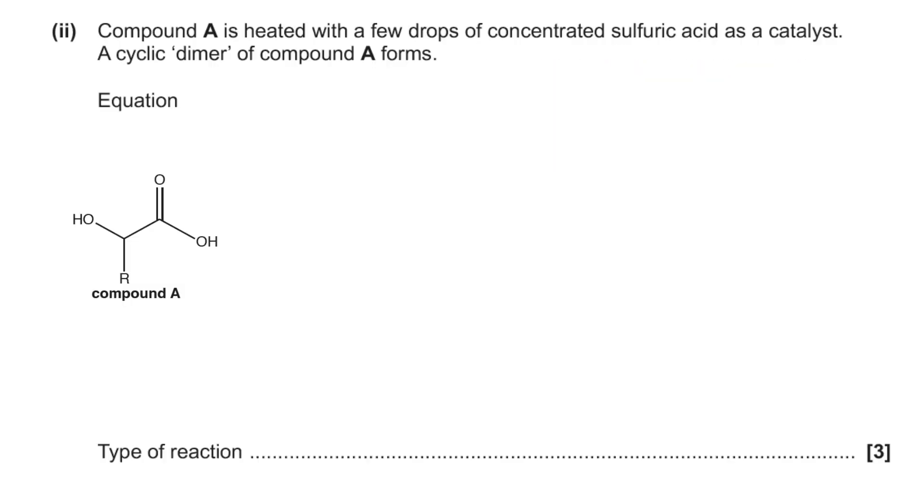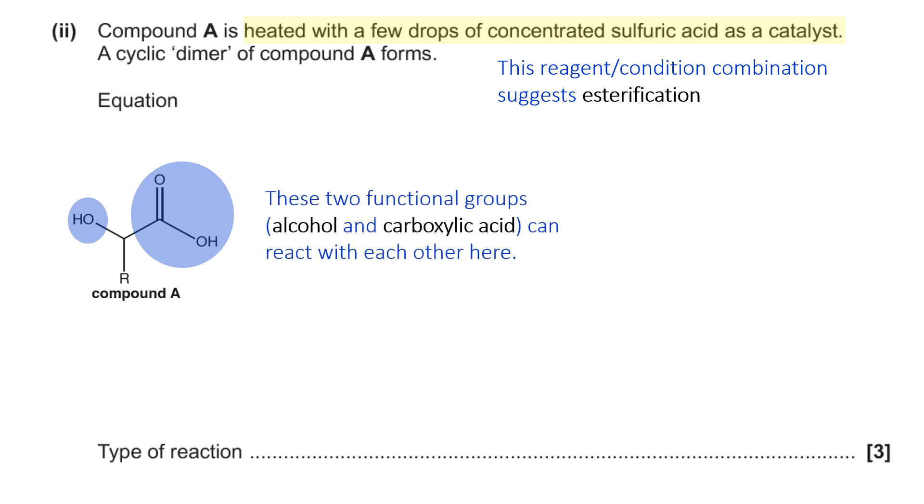Now, the final bit, I've put the compound A on screen. It's not in the question on the paper. You'd have to go back a couple of pages to have a look at it again. So it says it's heated with a few drops of concentrated sulfuric acid. Now that should be raising alarm bells in your head, thinking, ah, right, esterification, because that's the reagent condition you need. Seeing as in the compound, you have an alcohol and a carboxylic acid functional group. So they can react with each other either directly or in two separate molecules of compound A. So the next thing to think about is what they mean by cyclic dimer. Now, you're not expected at A-level to know from recall what a dimer is. That's covered at university level chemistry.